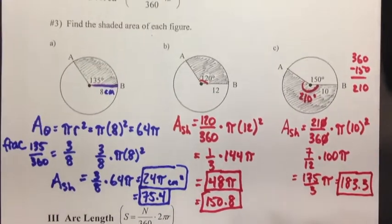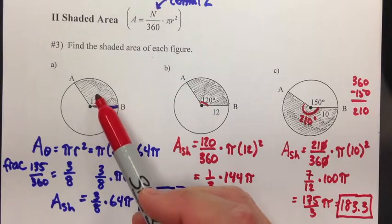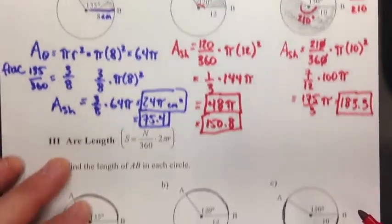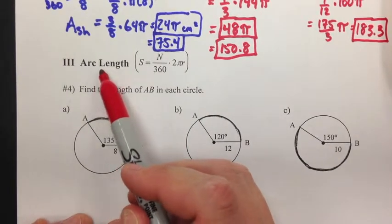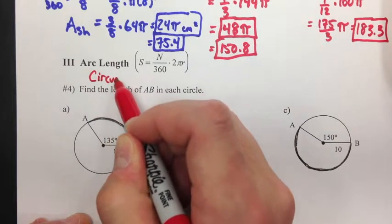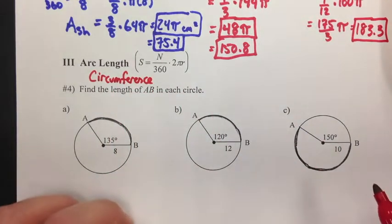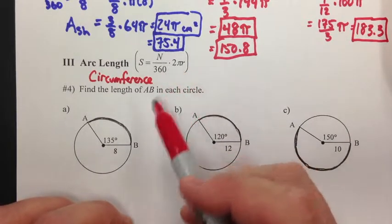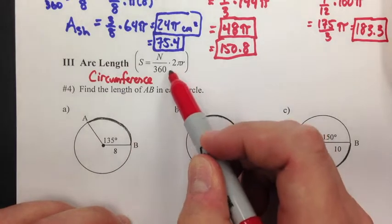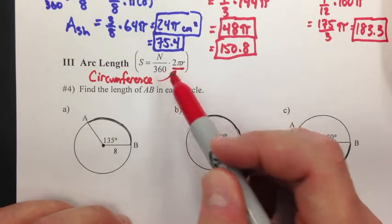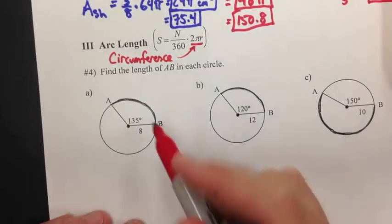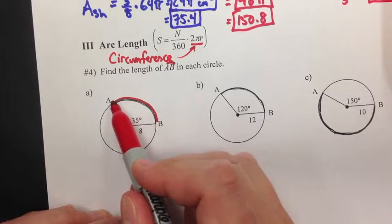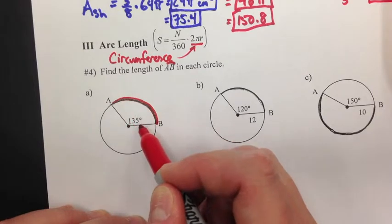The concept is: take the fraction of the whole circle that's being shaded, multiply it by the area of the circle, and you get the shaded area. Now the same kind of reasoning applies to arc length. Arc length is to circumference what shaded area is to total area. To find the distance around a circle you use circumference — 2 pi times radius — then multiply by the fraction you're looking at. Here we want to calculate the length of arc AB in each circle.